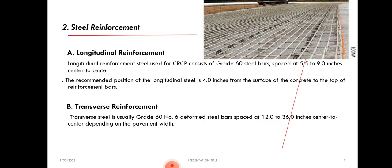The next component of CRCP is steel, used as a reinforcement material in the pavement. Steel is used in two major types: longitudinal reinforcement and transverse reinforcement. Longitudinal reinforcement steel used for CRCP consists of grade 60 steel bars spaced at 5.5 to 9 inches center to center. The recommended position of the longitudinal steel is 4 inches from the surface of the concrete to the top of the reinforcement bar. For pavement thickness greater than 0.95 foot, a slightly deeper cover is needed so that the transverse bar is not cut by the joints.